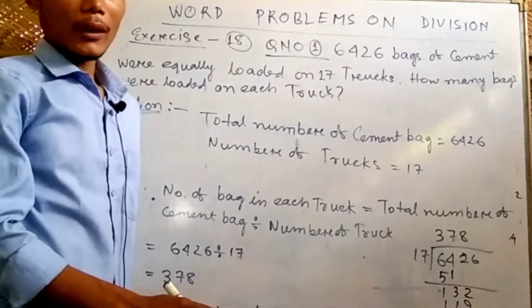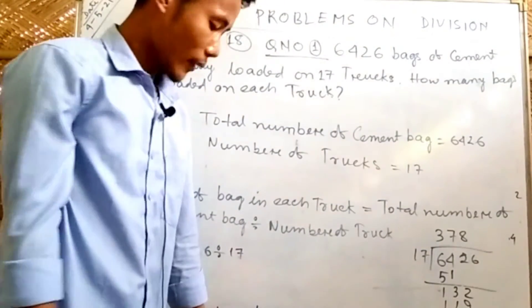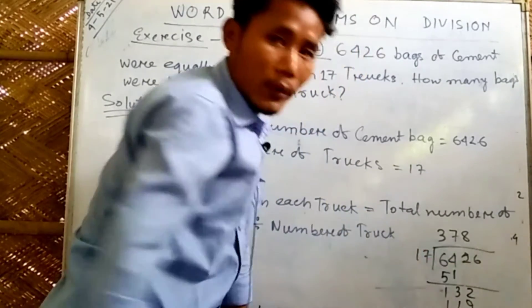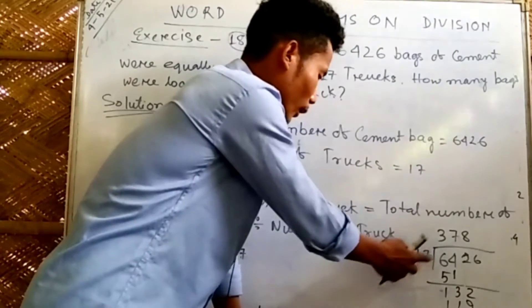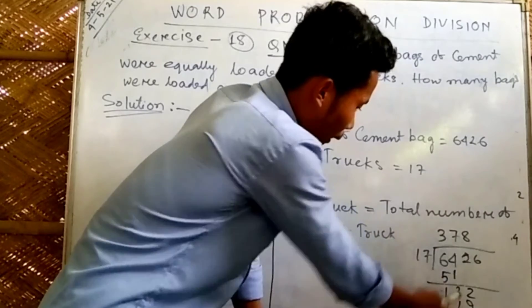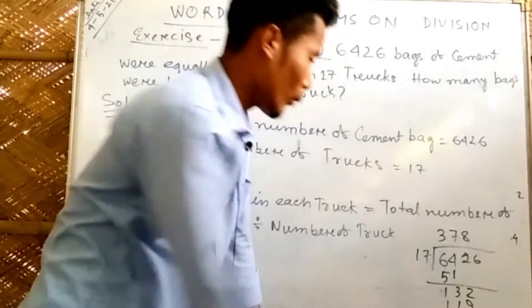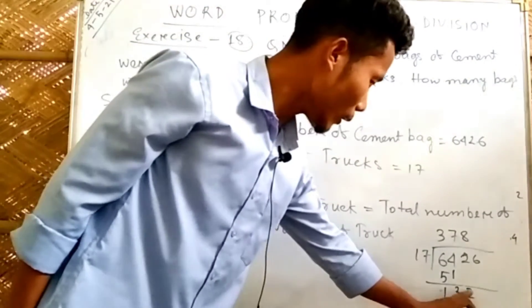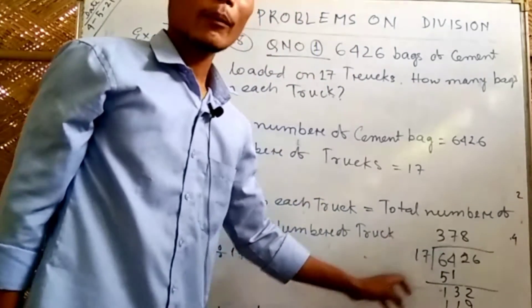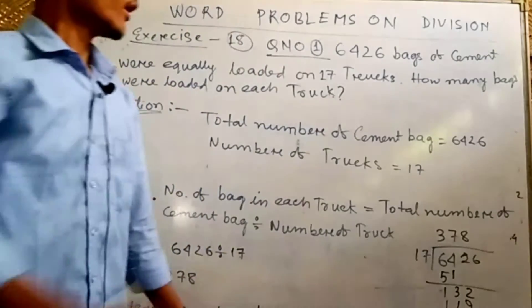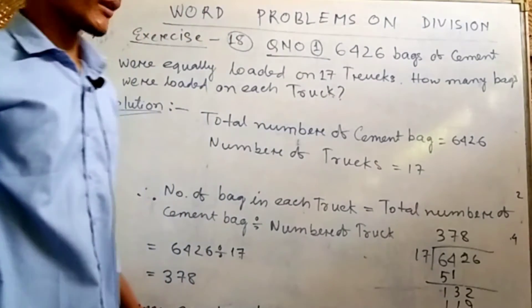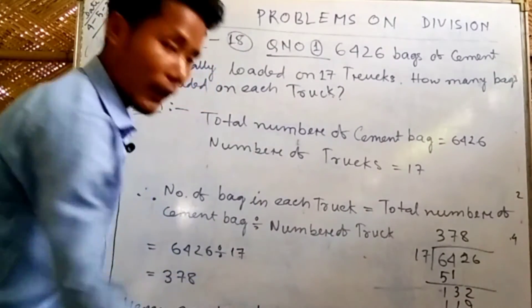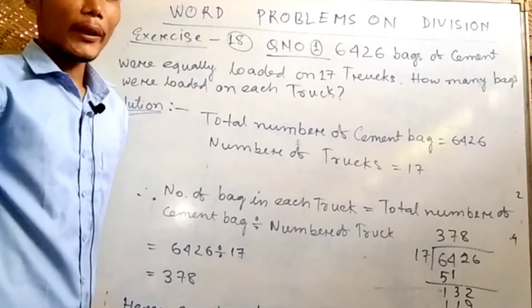The total number of cement bags is 6426 divided by 17. Working through the division: 6426 divided by 17 gives 378 bags loaded on each truck.